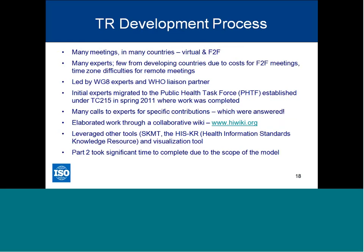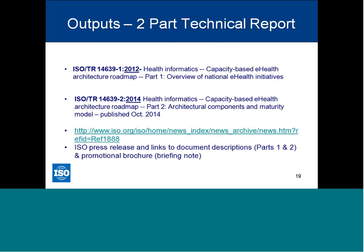The outputs are two parts. Part one was published in 2012 covering an overview of national initiatives. Part two — the architectural components and maturity model for the roadmap — was published in October 2014, just off the press. ISO put out a press release and a brochure about the documents.